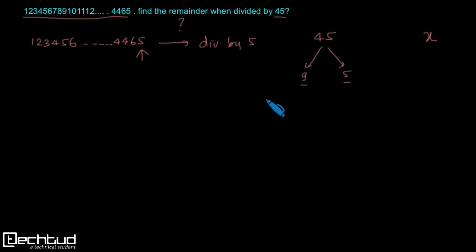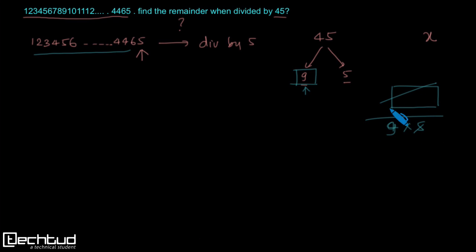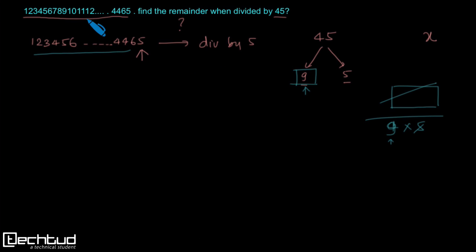Our next point is the remainder from factor 9. When dividing by 45, if this number has some remainder, it will be due to factor 9. Because 45 = 9×5 and 5 is already completely dividing this number, any remainder will be caused by 9 only. By the divisibility rule of 9, if the sum of the digits of a number is divisible by 9, then the number is divisible by 9.